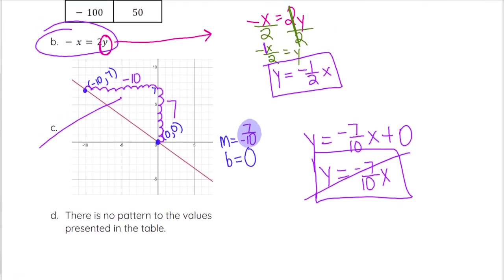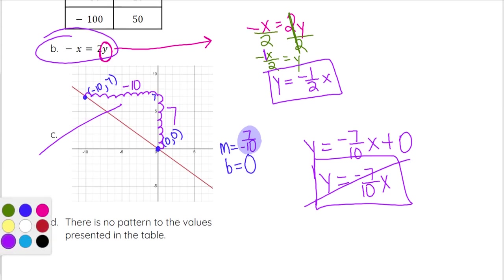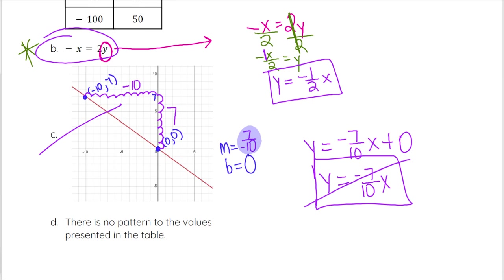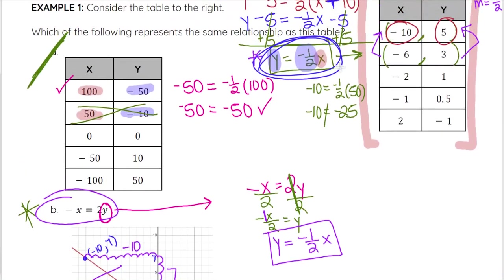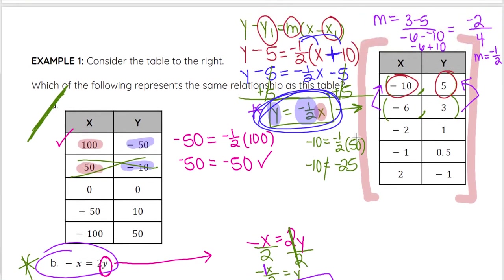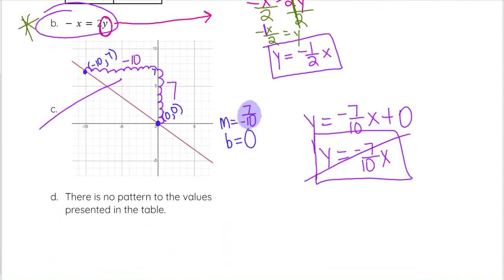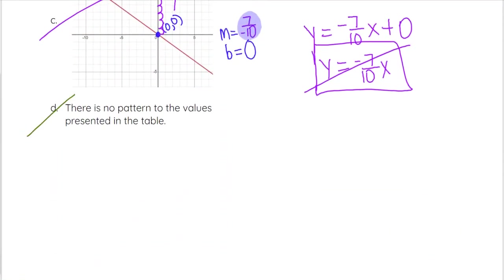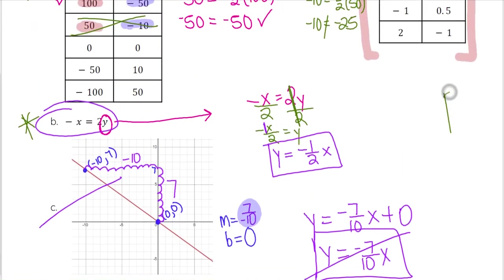For answer choice D, there is no pattern to the values in that table, whereas our original table does have a linear pattern — we were able to find a linear equation for it. So D would not be a correct answer. B is your answer on this one.